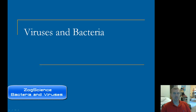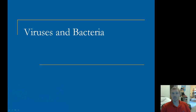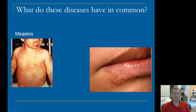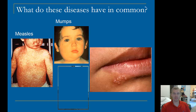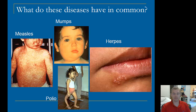Hello and welcome to another edition of ZogScience. Today we're going to be taking a look at viruses and bacteria. We're going to be exploring some of the characteristics of these things. Some examples of diseases we'll look at include measles, mumps, herpes, and polio.